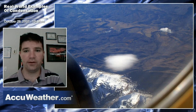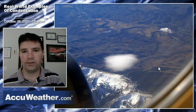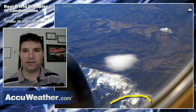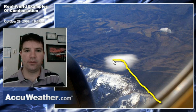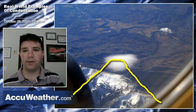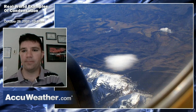Here's an example of a lenticular cloud from the air — this was shot from an airplane out in Colorado. This is probably the mountain here that's causing the cloud. Again, the air is flowing up over the mountain, hitting its condensation point, and the water vapor condenses out into droplets or ice crystals, then goes back down on the other side.